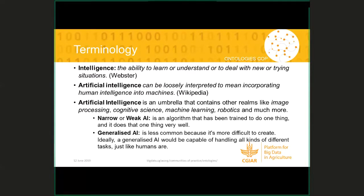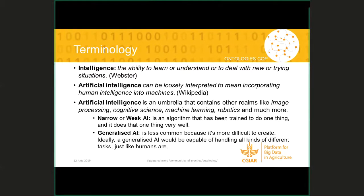The central term here is artificial intelligence. AI as an academic discipline was founded in 1956 and it incorporates and is related to many other disciplines. Artificial intelligence can be divided into two main categories. Weak or narrow AI is currently the most common applied artificial intelligence — algorithms are trained to do just one specific task and they perform that task often better than humans. However, in order to perform a different task, these algorithms have to be trained all over again.